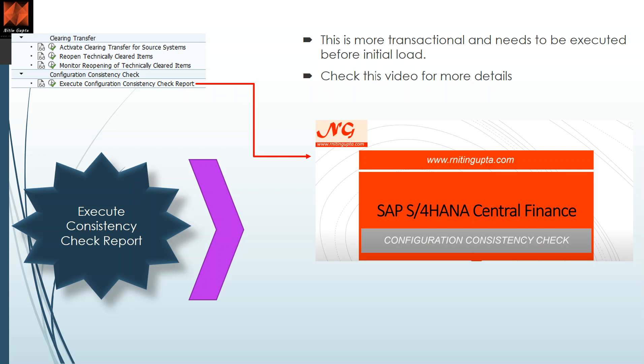The last part of this video is the configuration consistency check. This is a report — a transaction — that you need to run before the initial load to ensure the system matches both CFIN and the target system. It checks master data, configuration, currencies, and document splitting to ensure everything is correct and mapped in both systems. There is no separate configuration for this report; it is a standard report. For full details I recommend viewing a dedicated video already available on the channel specifically about configuration consistency check.